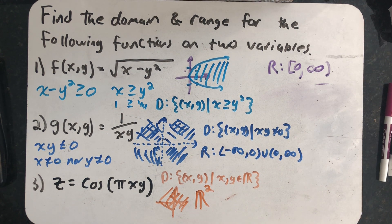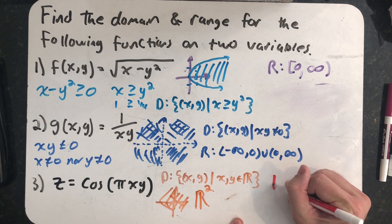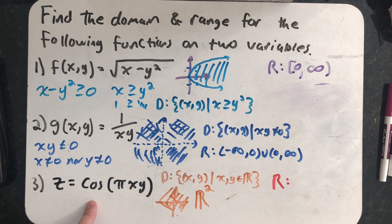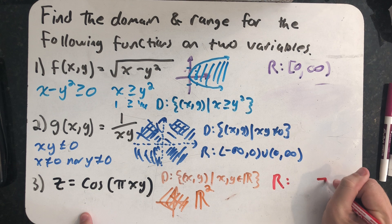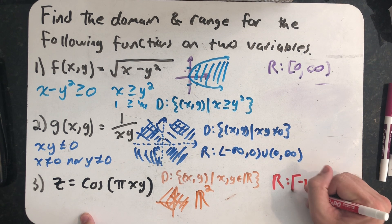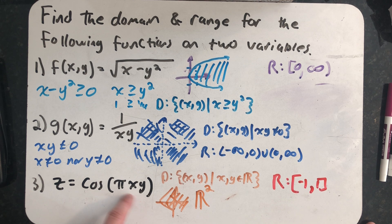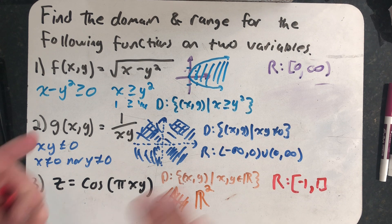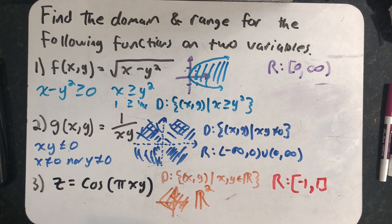The range I know just simply from knowing the range of cosine. The biggest cosine can ever be is one. The smallest cosine can ever be is minus one. And because I can make the product x, y be any number I want it to be, I can make the product of x, y, and pi be anything I want it to be, which means we get out the whole range for cosine.